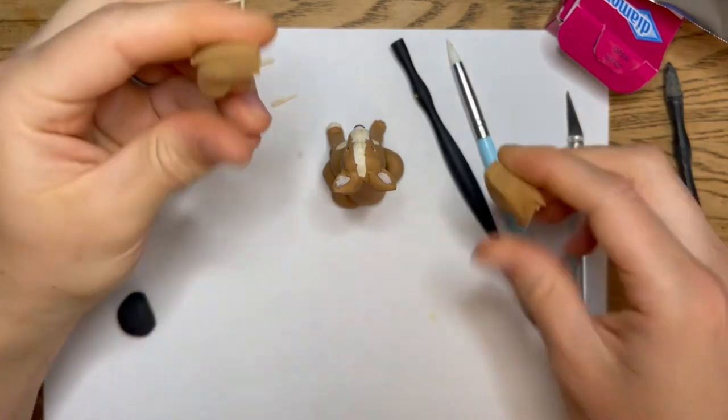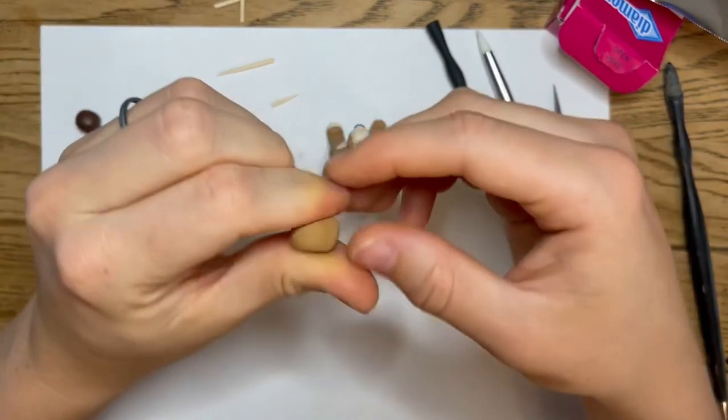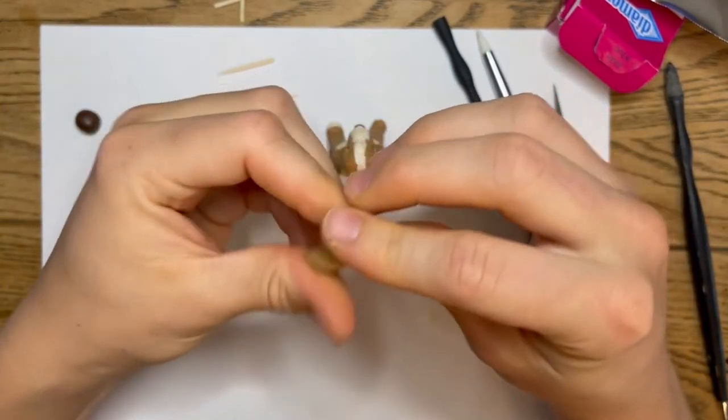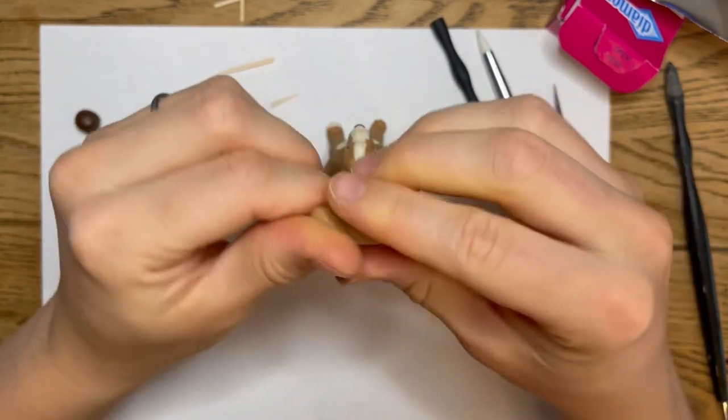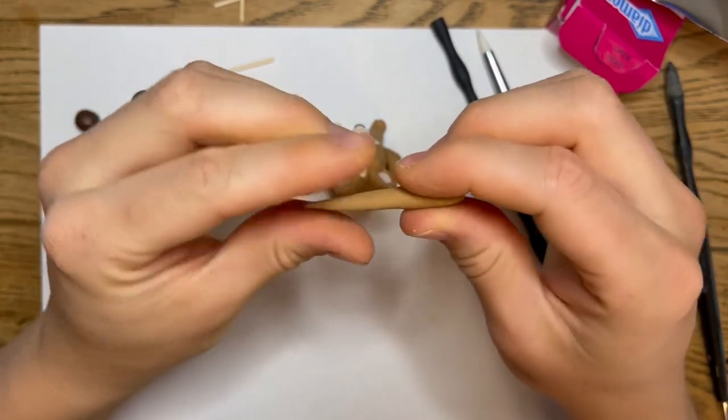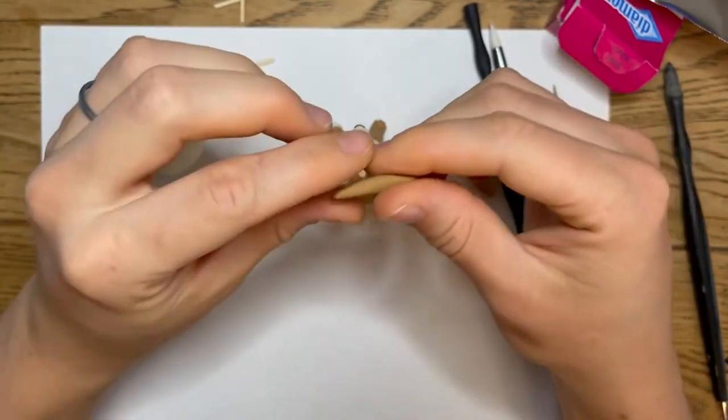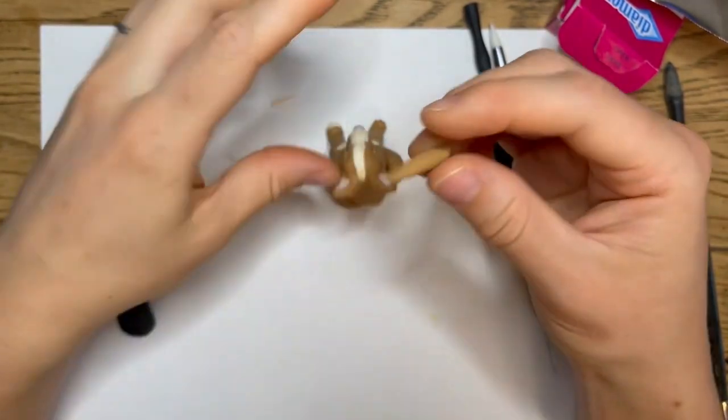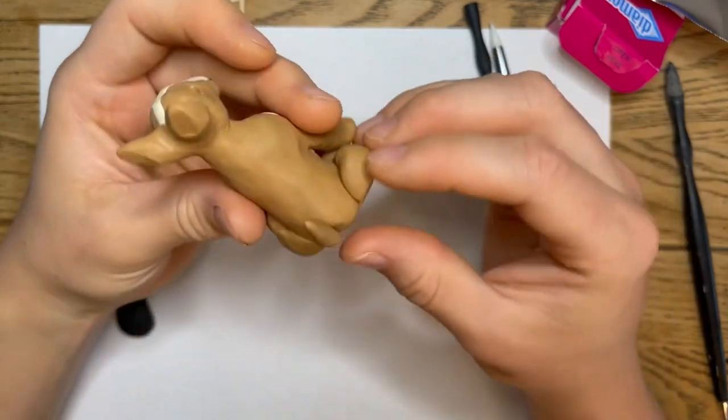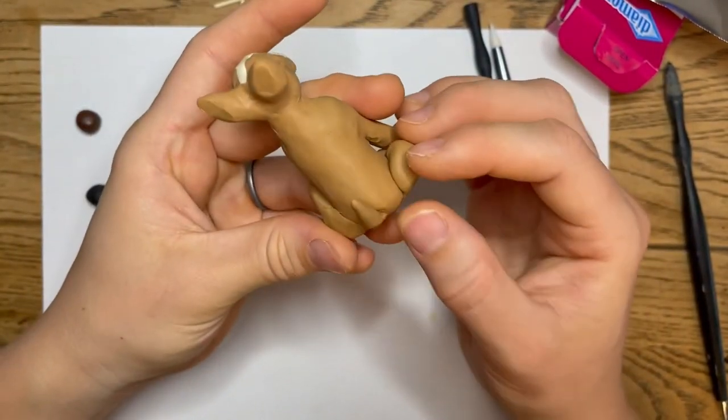Now for the tail, do the same thing we've done. Take some clay, roll it into a ball, then roll that into a snake. And then break it off at about the length that your dog's tail is. Pinch the end and then attach it to the back. Smooth it in as you need, as you like.